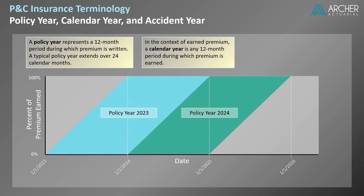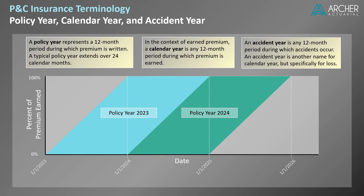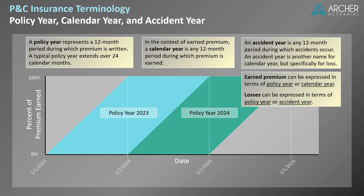Okay, we've described the difference between policy year and calendar year, but how about accident year? An accident year is any 12-month period during which accidents occur. An accident year is another name for a calendar year, but specifically for loss. Earned premium can be expressed in terms of policy year or calendar year. Losses can be expressed in terms of policy year or accident year. For more detail on accident year versus calendar year losses, see the video captioned above.